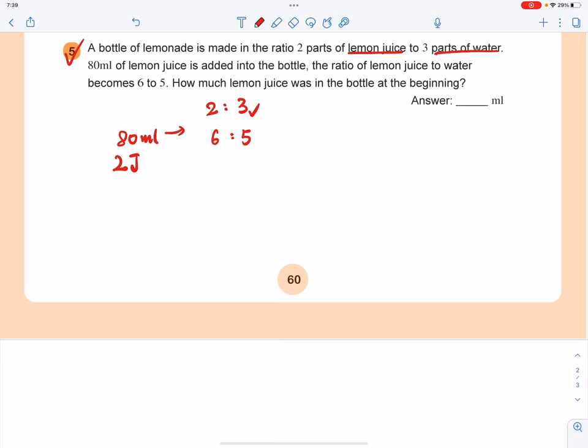Originally you have three parts of water and then you get five parts of water, but actually that should be the same. So that means you need to convert these two ratios into the same water number. So 3 and 5, the lowest common multiple will be 15.